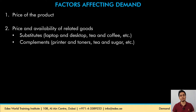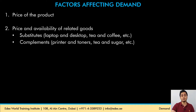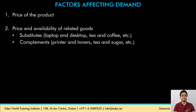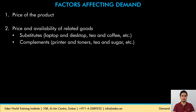The second factor is the price and availability of related goods. Related goods can be either substitutes or complements. Substitutes are products that can be used in place of the good in hand — for example, laptops and desktops, or tea and coffee. Complements are products that must be used along with the good in hand — for example, printers and toner cartridges, or tea and sugar.